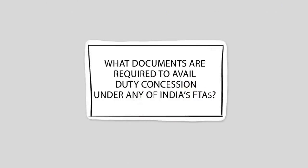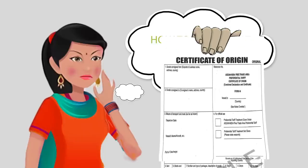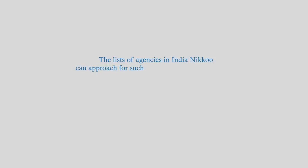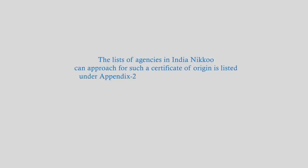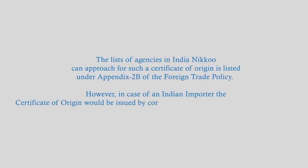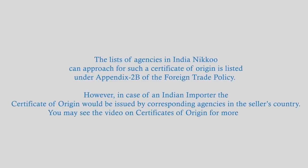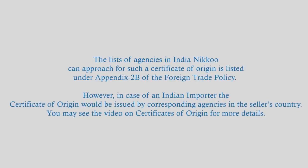What documents are required to avail duty concession under any of India's FTAs? To take advantage of tariff benefits given under an FTA, the Indian exporter like Nikhu has to prove that her goods are made in India as per the rules of origin agreed under the given FTA. This is proven by a document called the Preferential Certificate of Origin. The list of agencies in India that Nikhu can approach for such a Certificate of Origin is listed under Appendix 2B of the Foreign Trade Policy. In case of an Indian importer, the Certificate of Origin would be issued by the corresponding agencies in the seller's country.